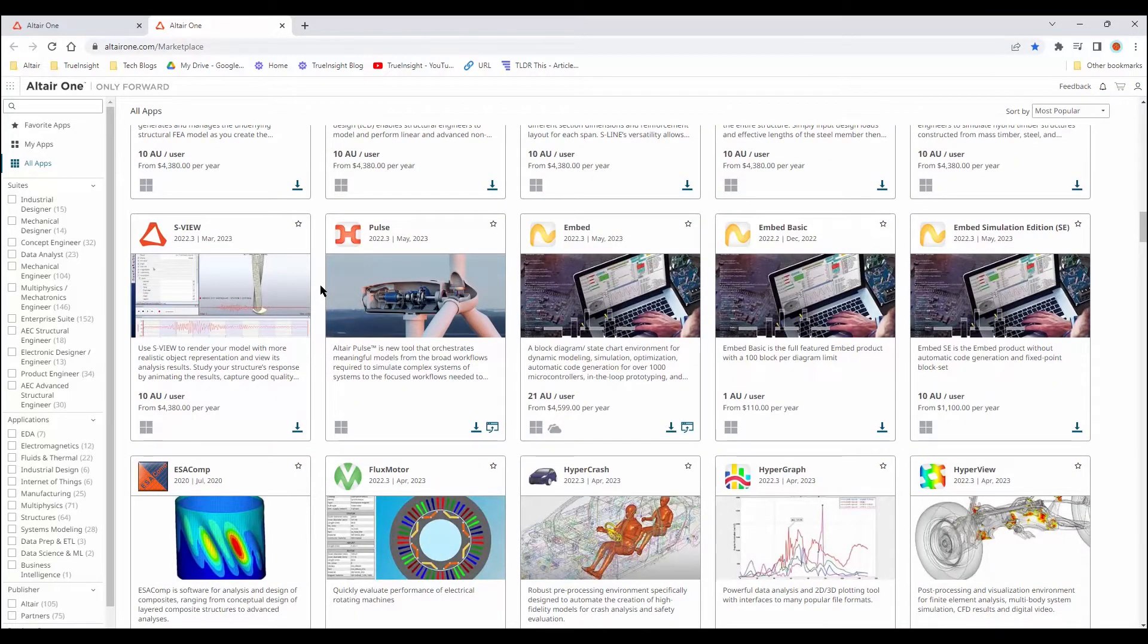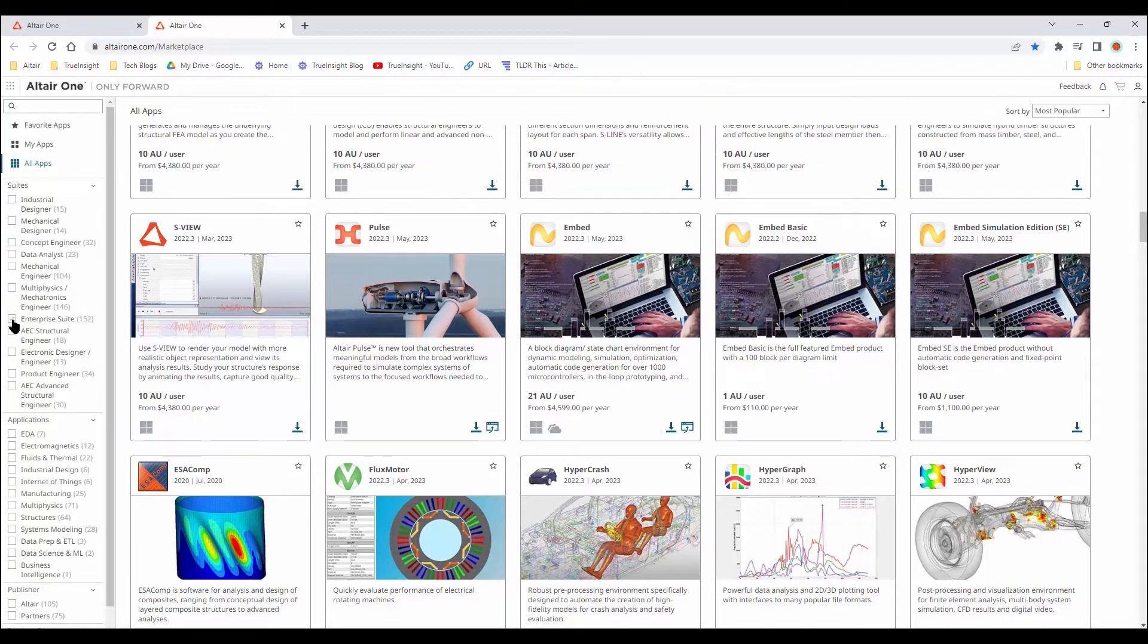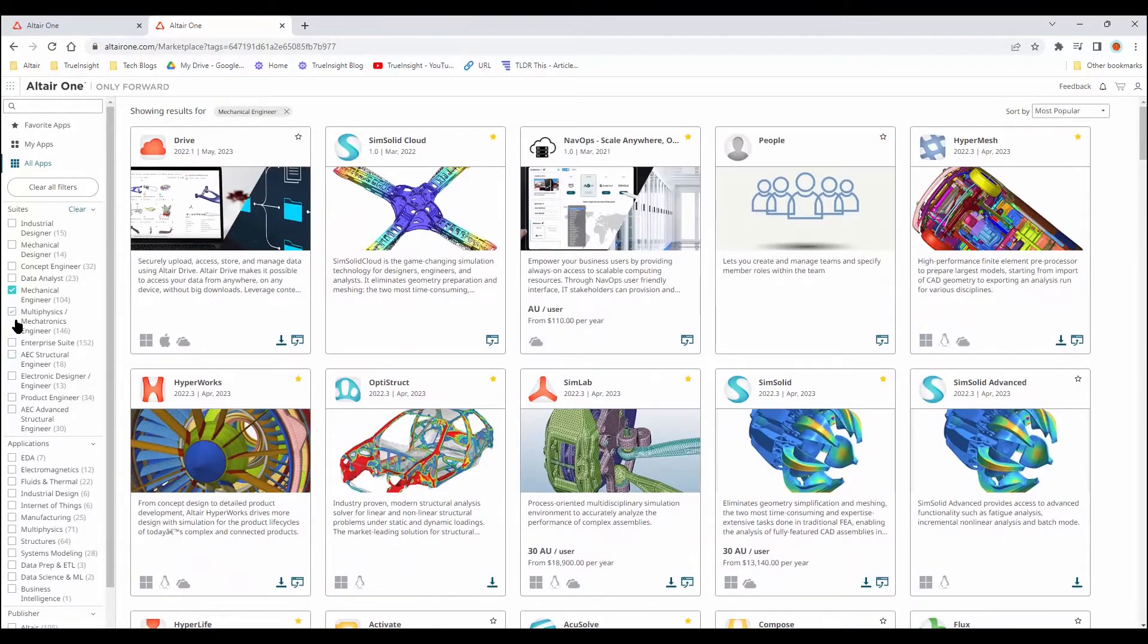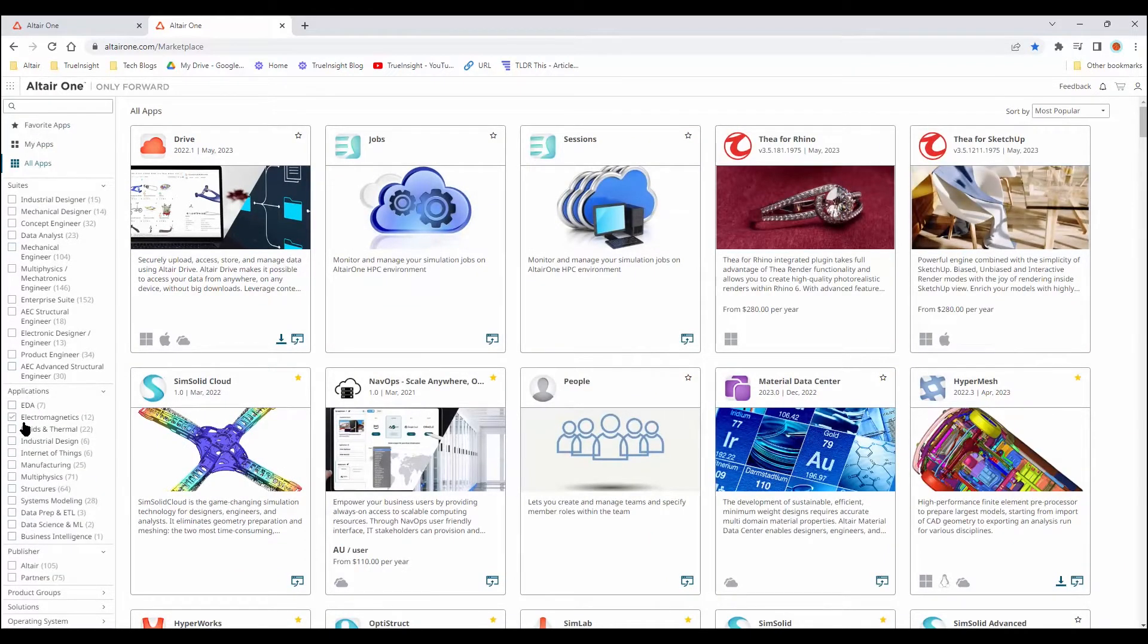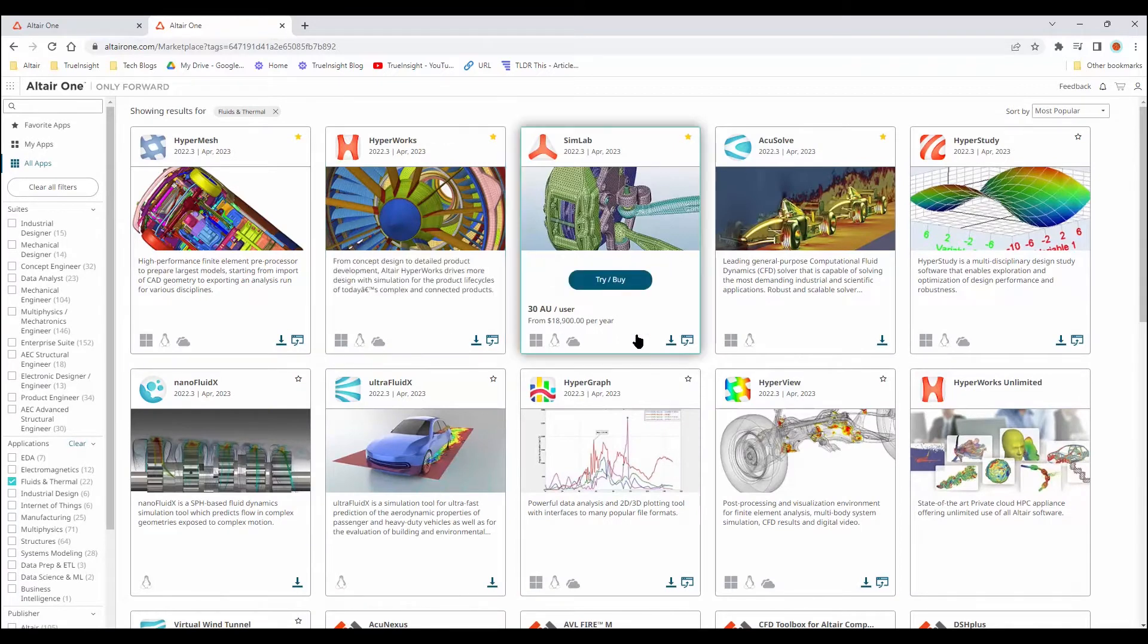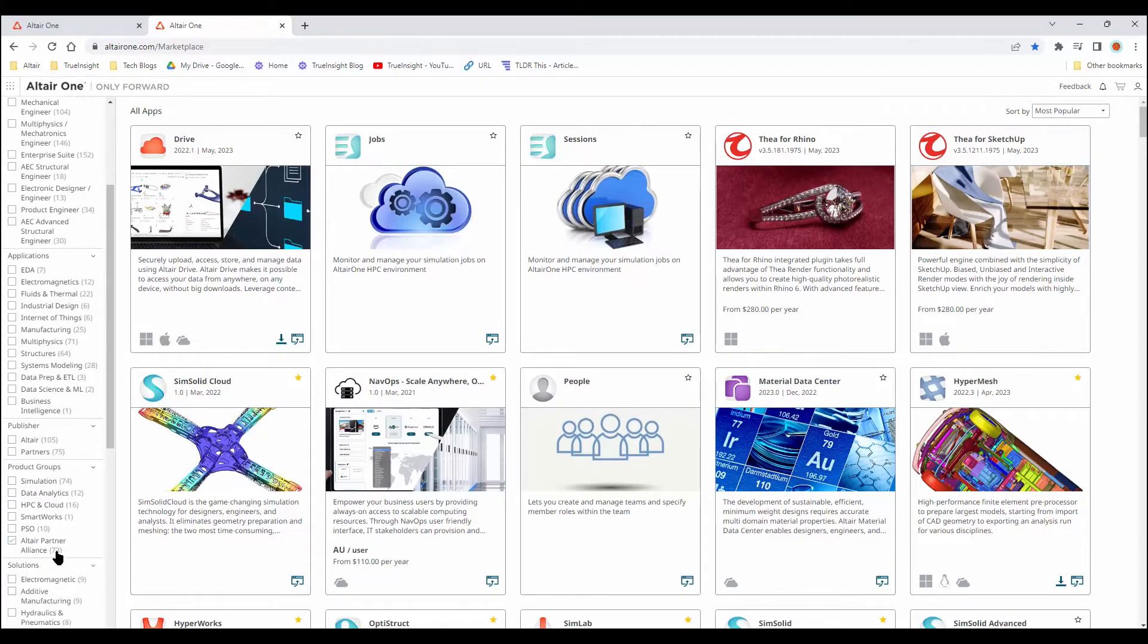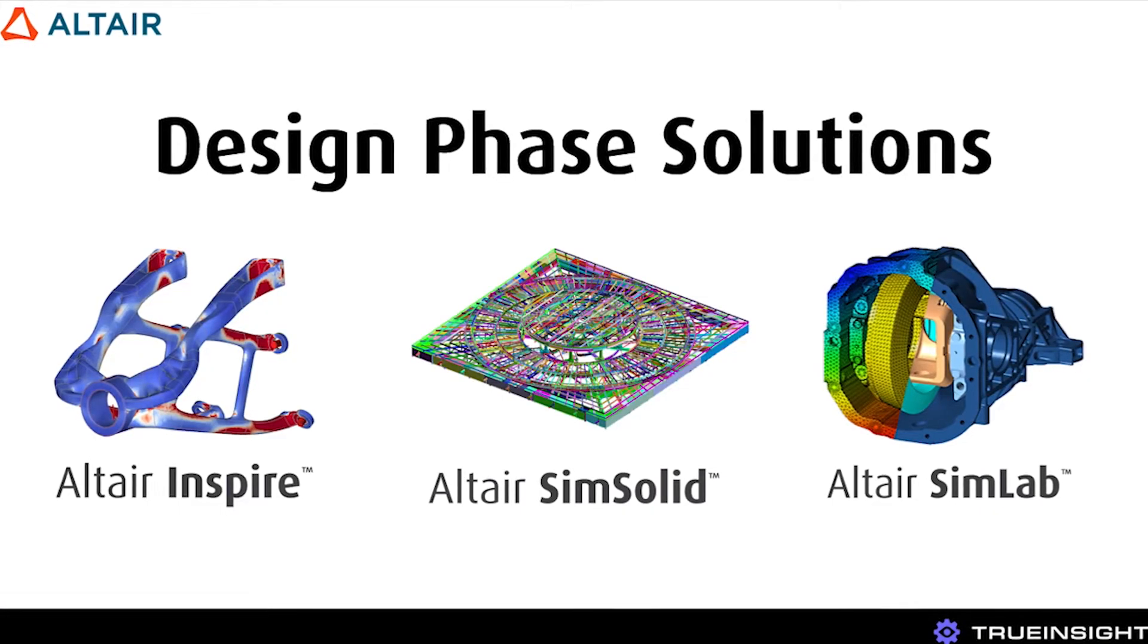The easiest way I found to navigate the marketplace is by either the suites, based on the description of concept engineering, mechanical engineering, multi-physics, and more. You can also navigate by the application type - if I click on fluids and thermal, it will narrow the selections down to just the tools that include fluids and thermal capabilities. You can also filter selections by the solution type or the operating system, or you can just use the simple search function.